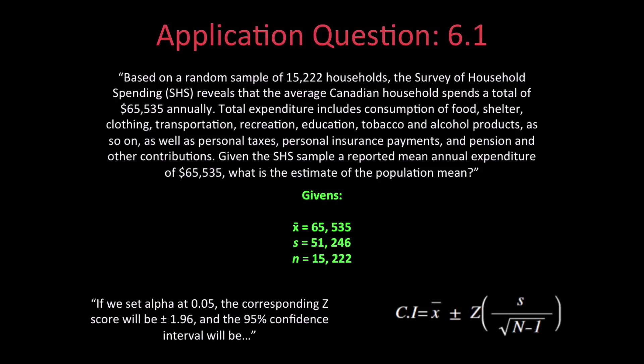Total expenditure includes consumption of food, shelter, clothing, transportation, recreation, education, tobacco and alcohol products, and so on, as well as personal taxes, personal insurance payments, and pension and other contributions. Given the SHS sample with a reported mean annual expenditure of $65,535, what is the estimate of the population mean?